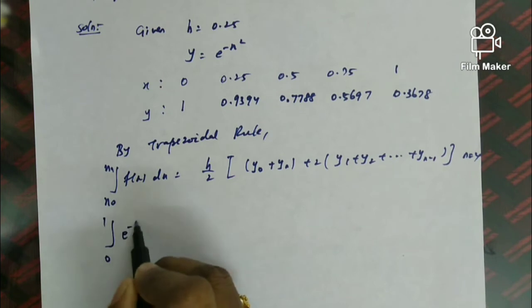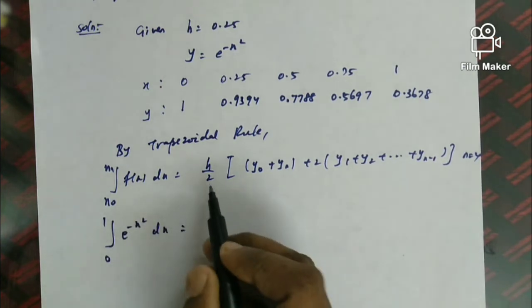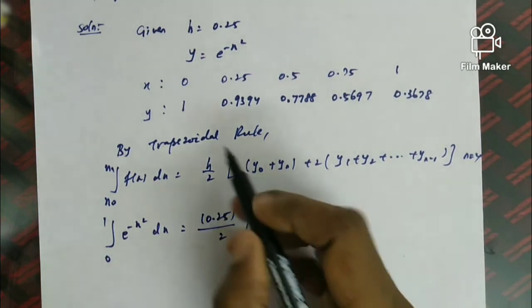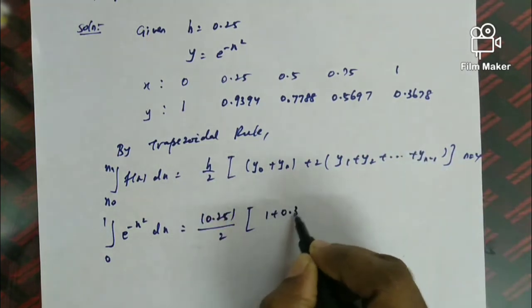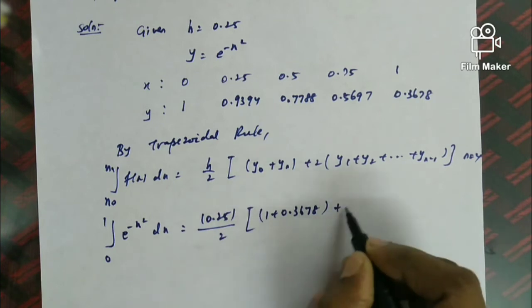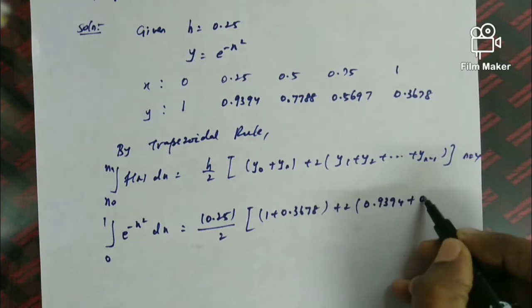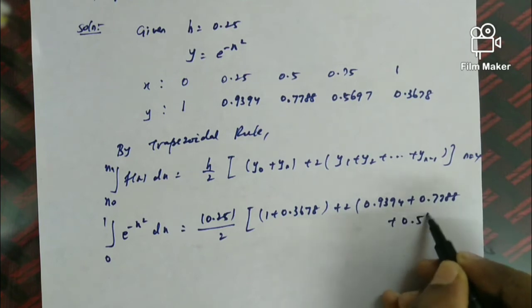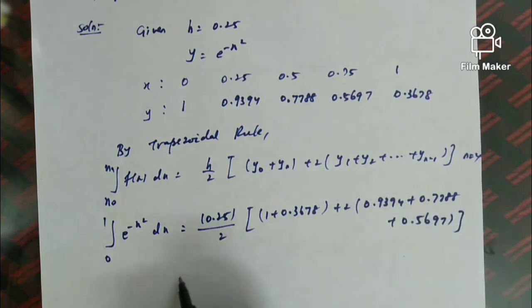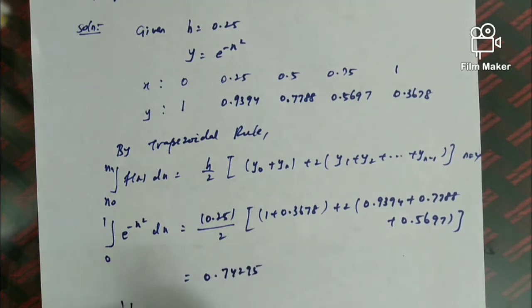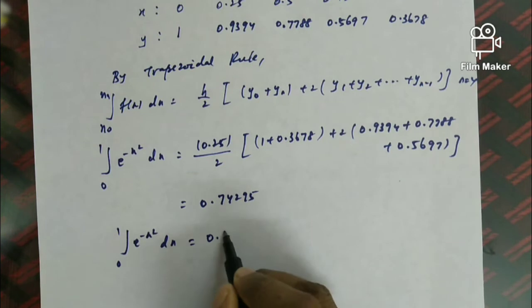Applying the Trapezoidal Rule: integral from 0 to 1 of e^(−x²) dx = (0.25/2) × [(y₀ + y₄) + 2(y₁ + y₂ + y₃)] = (0.25/2) × [(1 + 0.3678) + 2(0.9394 + 0.7788 + 0.5697)]. The answer is 0.74295. Therefore, the integral from 0 to 1 of e^(−x²) dx ≈ 0.74295.